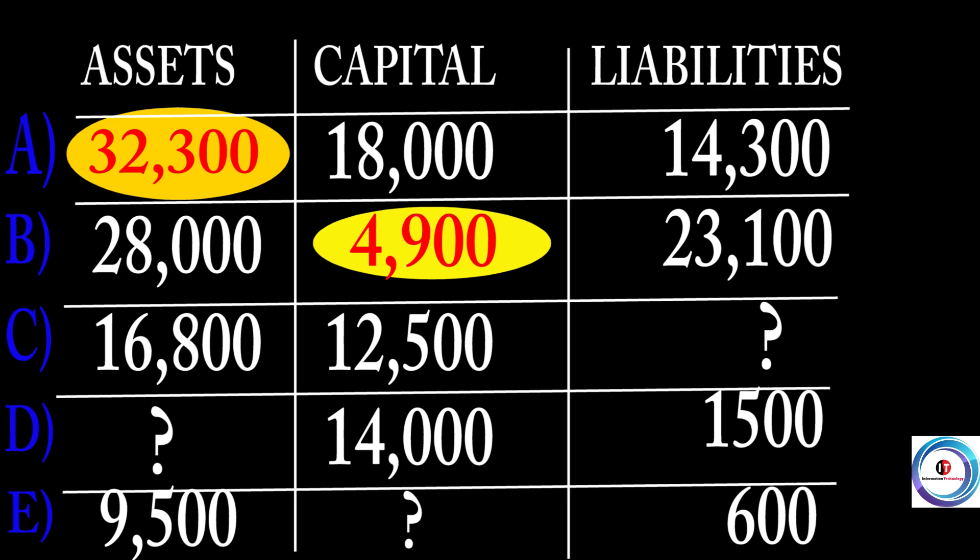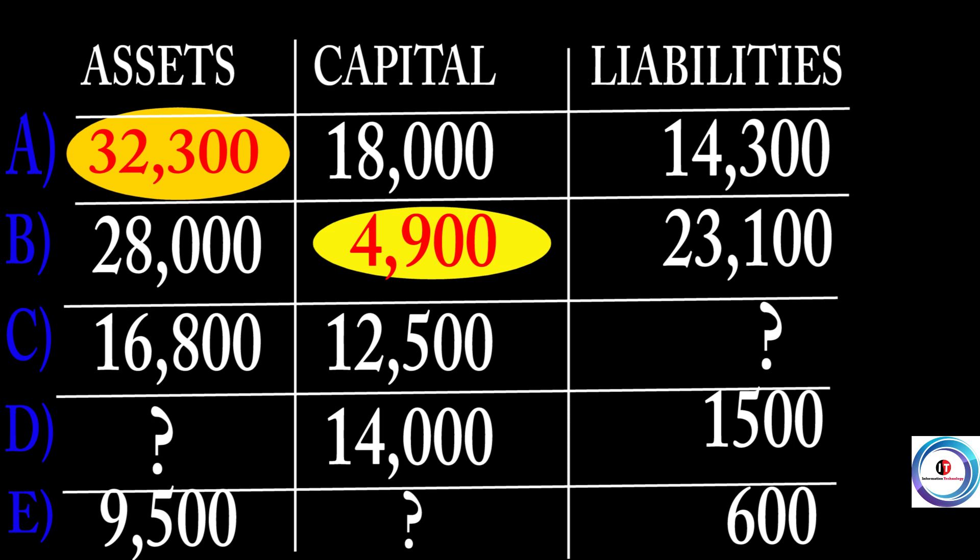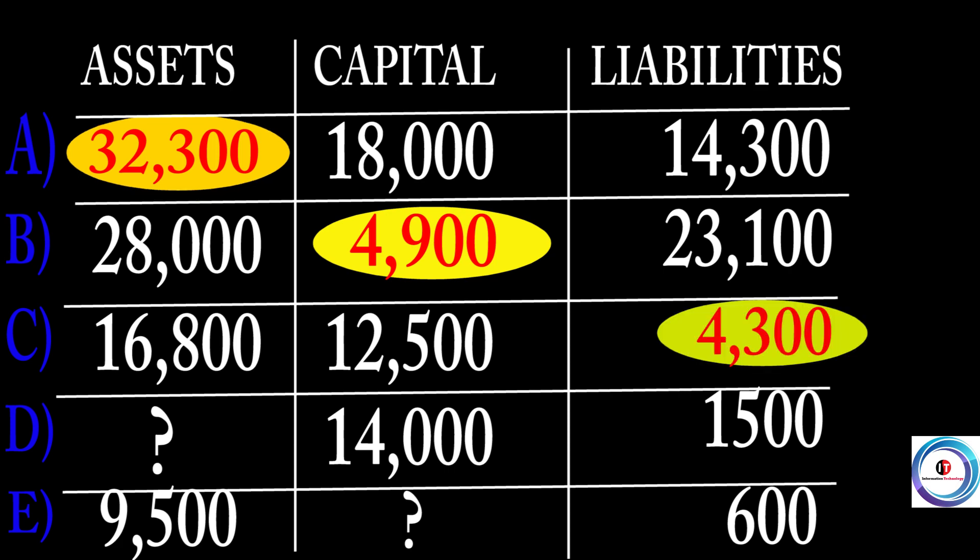Then you come to Part C. Always look for what you are required to find. What are we asked to find? Liability. So the asset value was 16,800 minus capital which was 12,500. So I hope that is clear.